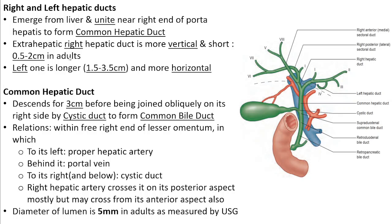The right and left hepatic ducts emerge from the liver via the porta hepatis and unite near the right end of the porta hepatis to form the common hepatic duct. The right hepatic duct's extrahepatic part is nearly vertical and only 0.5 to 2 centimeters long. The left hepatic duct is more horizontal with a longer course of 1.5 to 3.5 centimeters. They unite to form the common hepatic duct, which descends about 3 centimeters before being joined obliquely on its right side by the cystic duct, though other configurations exist.